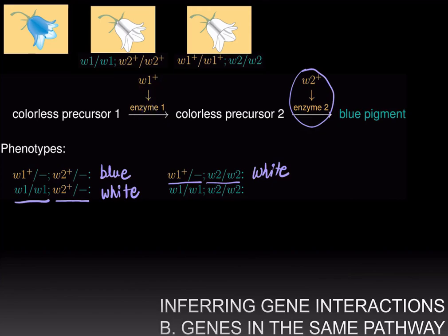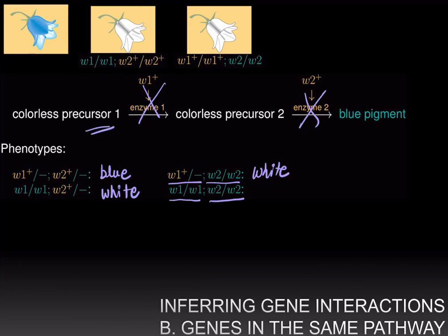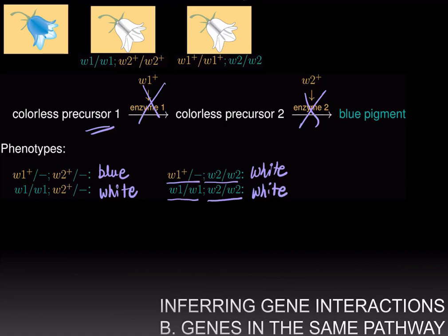Finally, if you are the double mutant — homozygous for the mutant allele of both genes — you have neither enzyme, and you will remain stuck at the colorless precursor 1 stage, giving a white phenotype. Next, let us work out the dihybrid cross and see what phenotypic proportions are expected when both genes are in the same pathway.